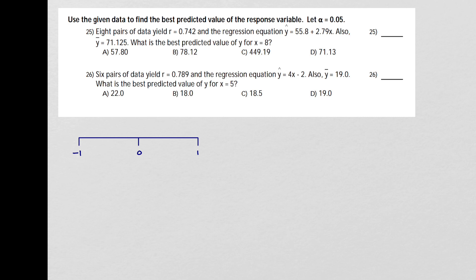So I'm going to put my critical r values, positive and negative, on my number line here. So my number line is a number line for the correlation coefficient, and we know that that has to be between negative 1 and 1.